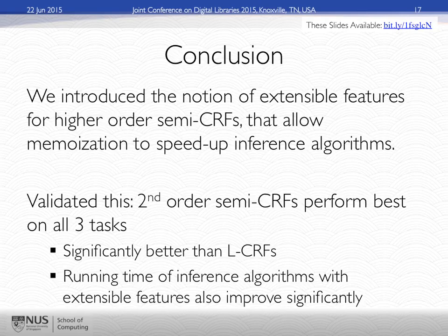It's a short paper, so let me conclude. We introduced the notion of extensible features. The trick is to use memoized computations as pre-computed results from previous observations, which allows us to change cubic complexity down to quadratic time complexity, making this algorithm tractable. We are currently implementing this into our Parscit information extraction system, which a number of systems have used, including CiteSeerX and Mendeley. So if you've used any of those systems, you've used some of our research.